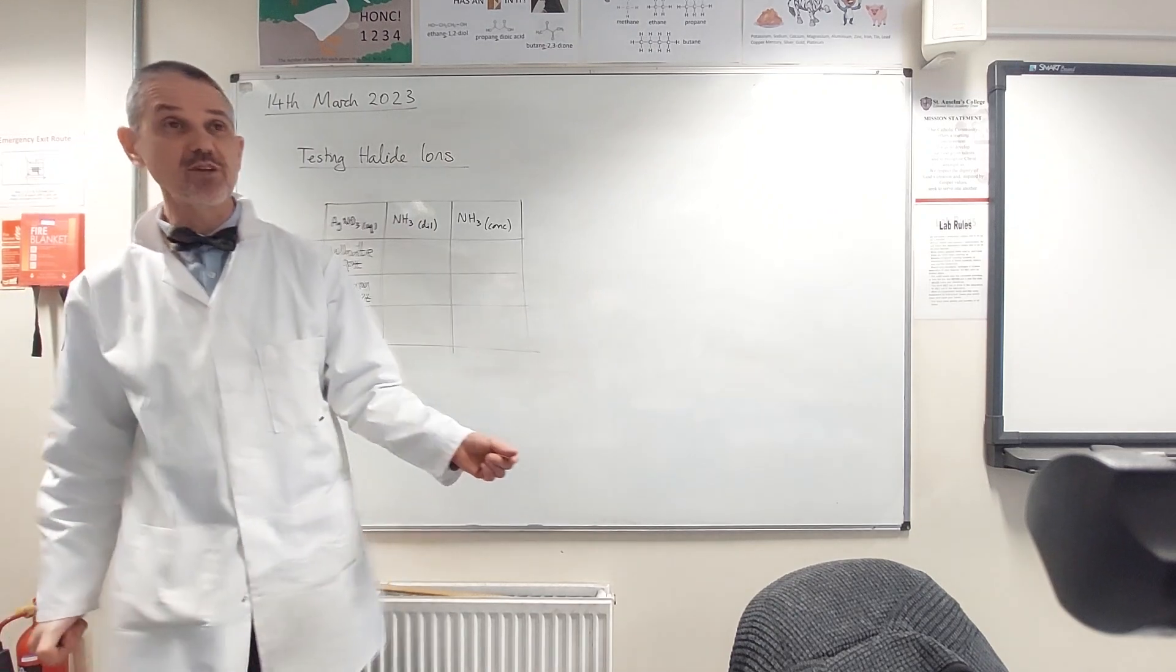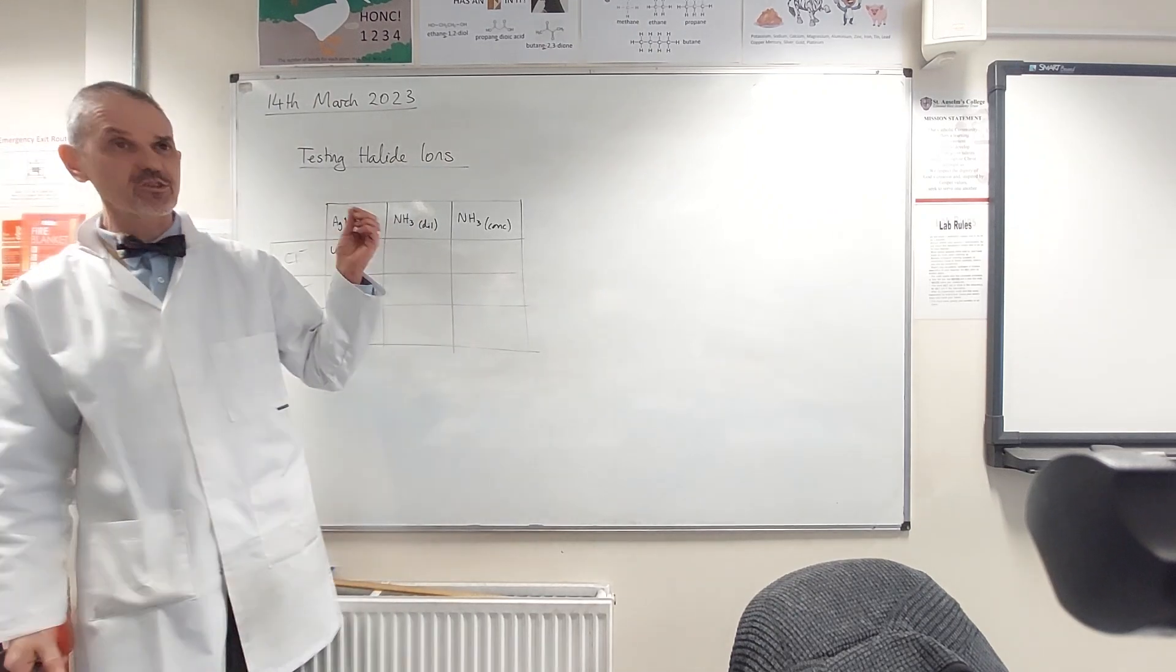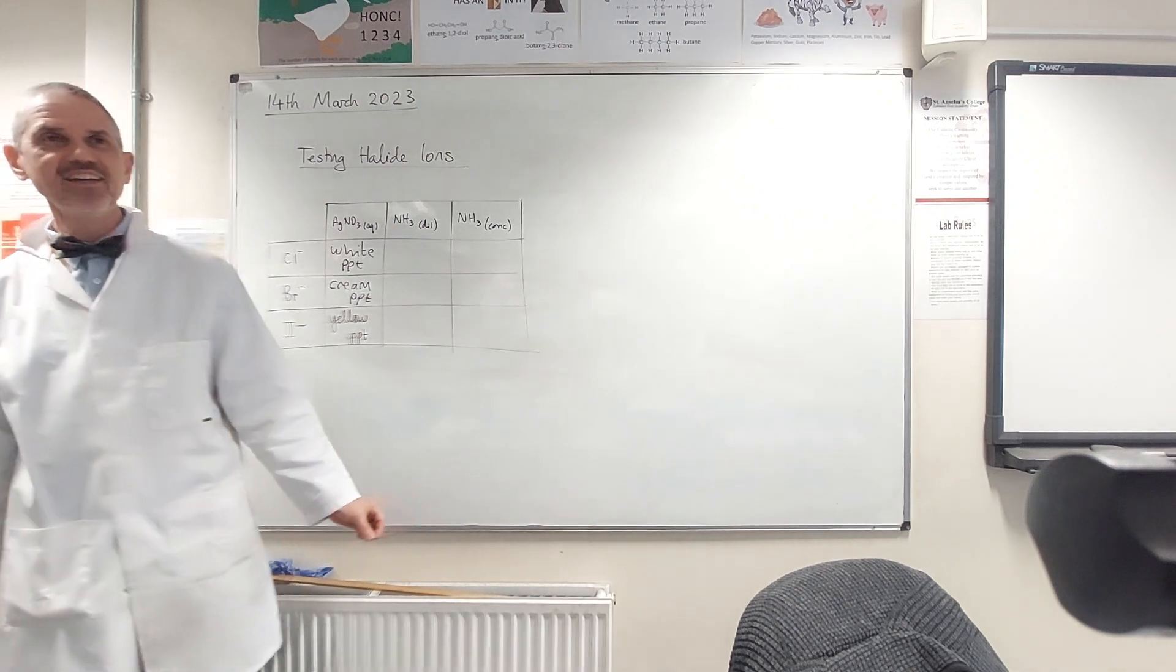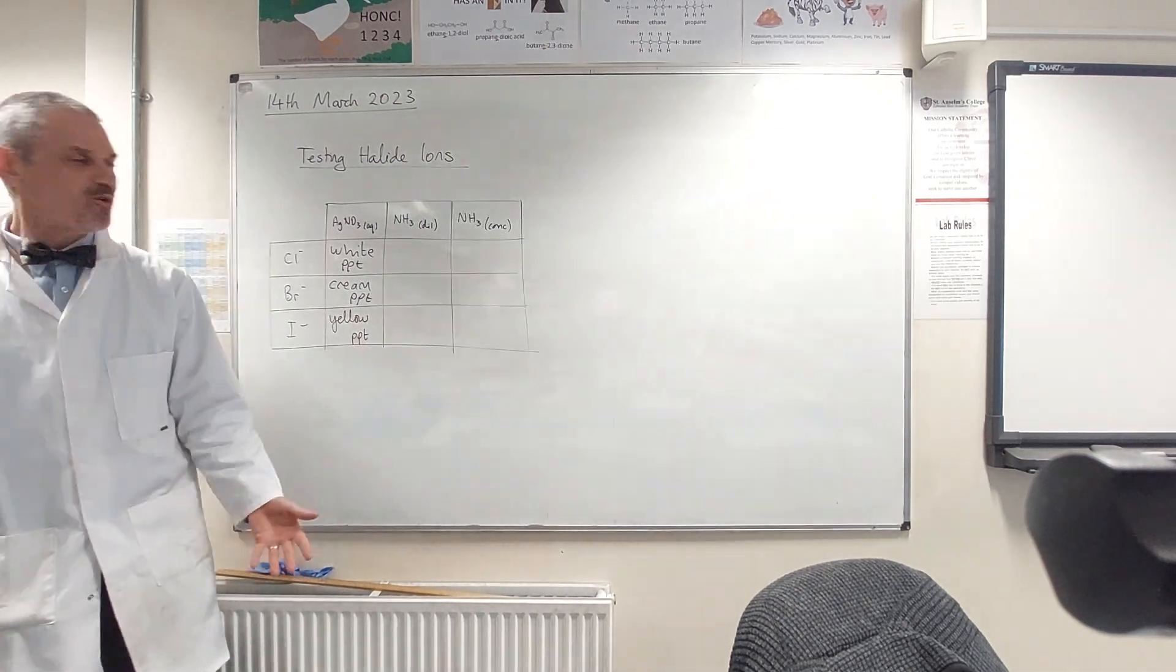So it's quite hard to distinguish those colours, especially if you've just got one of them. If you just do a test, and it's a sort of off-whitish, creamish, yellowish colour, then it's very hard to work out what it is.